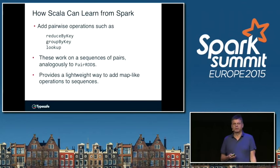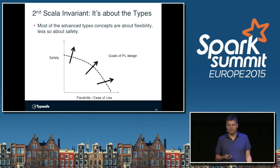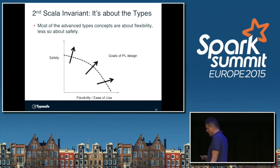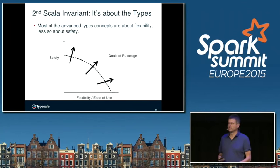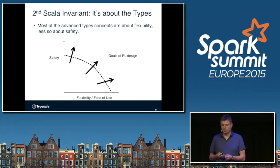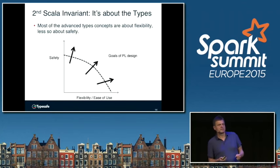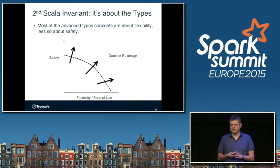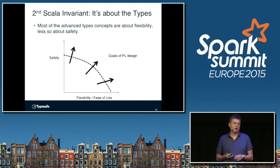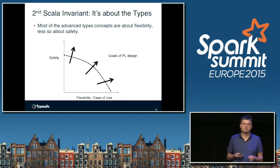That was the first design principle — scalability and how it relates to collections. The second design principle of Scala is that it's all about the types. Types are first and foremost in the language design; they're the hardest part and the part that most deliberation went into. When we talk about types, we often see a trade-off in industry and research between safety and flexibility. If you want maximal flexibility, you can make do with a single type — an untyped or dynamically typed language — and you're maximally flexible but you've thrown out all possible safety guarantees.